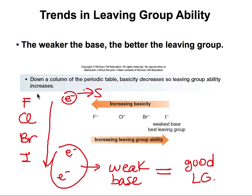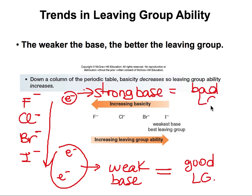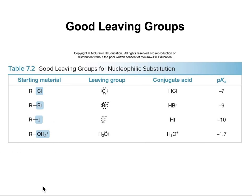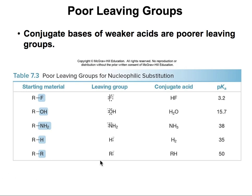F- is a strong base and a bad leaving group - the reaction won't happen because fluorine with a negative charge is not stable. Here are some examples of good leaving groups: the halogens become better leaving groups as they get bigger, and water is a really good leaving group because it leaves as a neutral species. Bad leaving groups include F-, O-, and N- - these carry negative charges and are strong bases, so they don't want to leave.